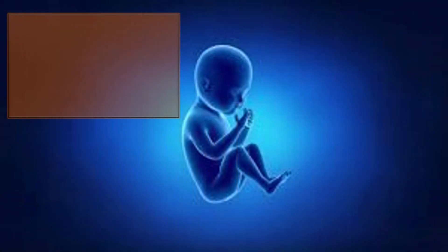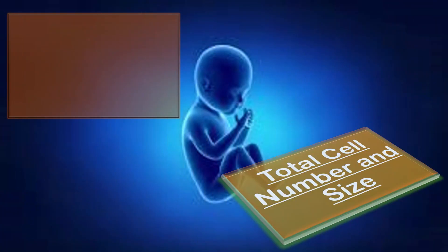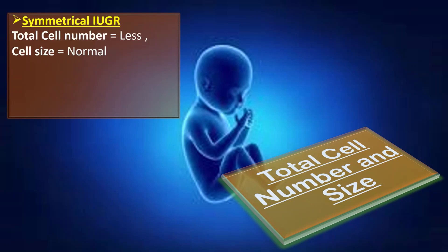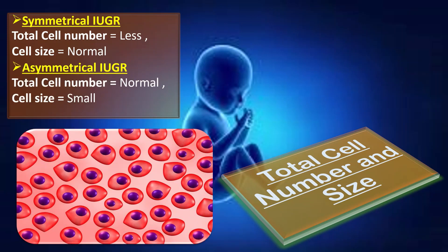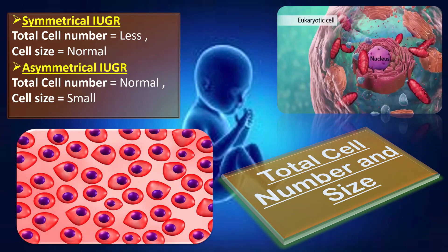The next difference is about total cell number and size. In symmetrical IUGR, the total cell number is less and cell size is normal. In asymmetrical IUGR, the total cell number is normal and cell size is small.